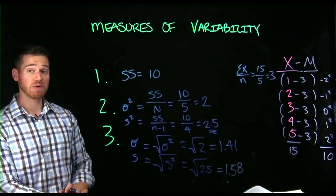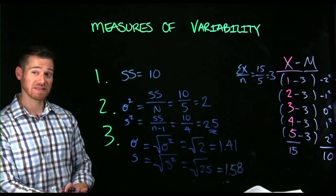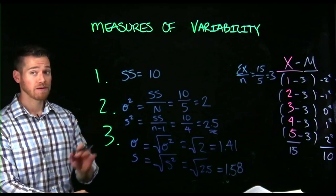And so here, this is how we would obtain sum of squares, variance, and standard deviation from a set of scores.